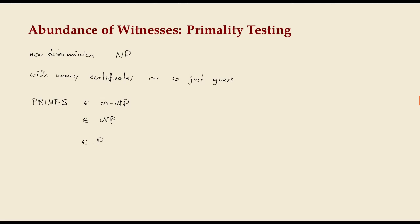Nevertheless, the deterministic algorithm that was developed for primes doesn't help in practice too much — it's slower than the methods we will look at now. I'm not presenting the best method from a practical point of view, because those are pretty sophisticated in terms of number theory. But we will use a few results that are basic enough that you might have seen proofs of them in a preliminary math course.